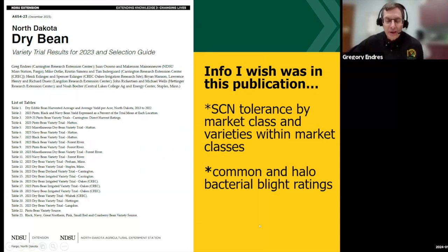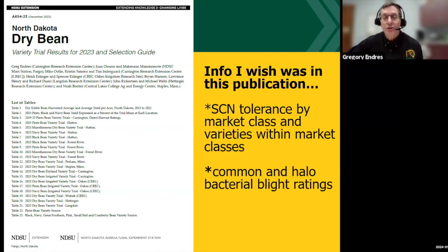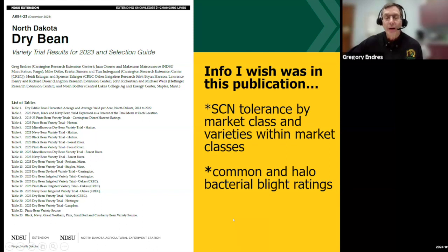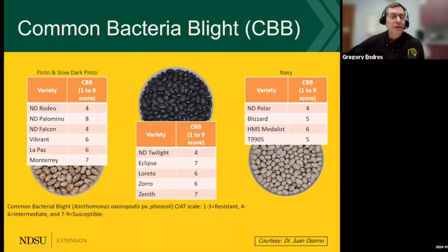This was my first attempt to be the lead author of the publication, and there are always things I wish we had included. One is that we have a fair amount of SCN — soybean cyst nematode — tolerance data based on market classes and varieties. Sam Markell plans to show a slide highlighting that information. Another area relating to disease is a limited database on bacterial blight ratings — for example, some limited NDSU test results on common bacterial blight for pintos, blacks, and navies. It would seem logical that having this information in the variety guide would be useful.